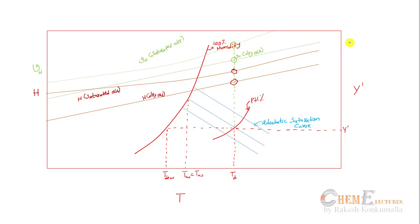This is how a psychrometric chart looks roughly. The y-axis has absolute humidity, humid volume, and enthalpy, and the x-axis is temperature. Suppose I know the absolute humidity Y' and dry bulb temperature — two quantities — I need to find the other five. I'll be explaining how to proceed with the psychrometric chart in detail.